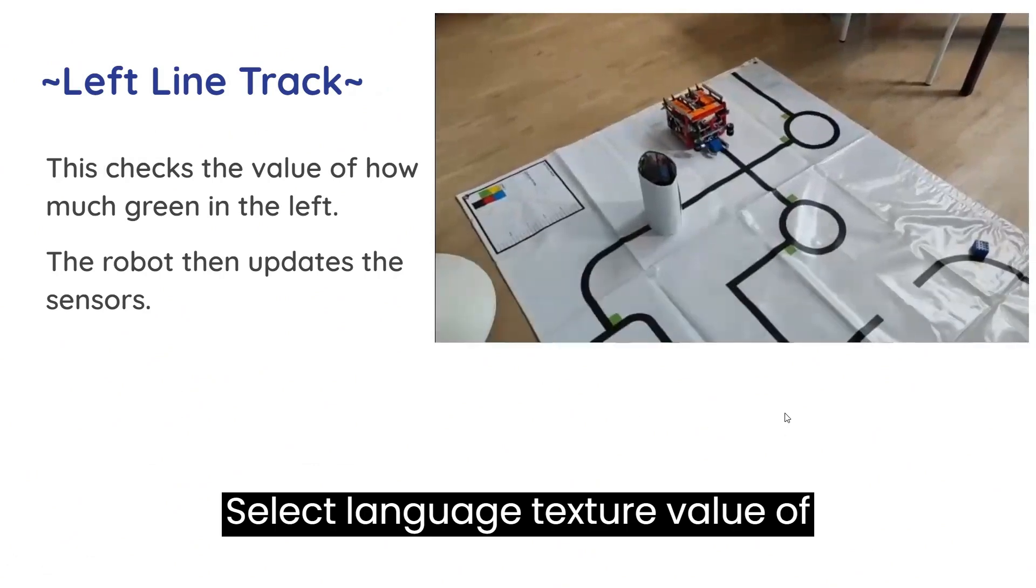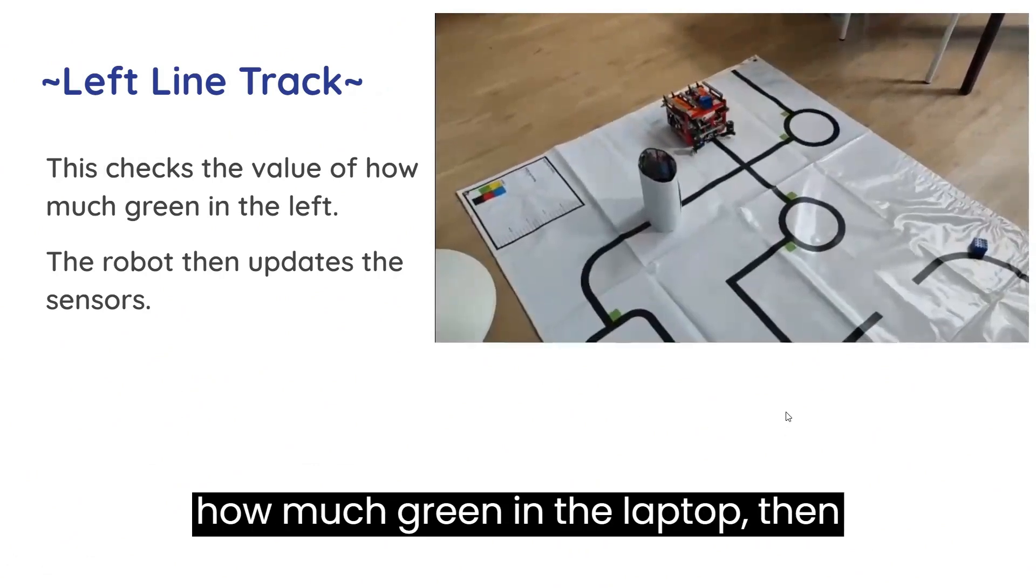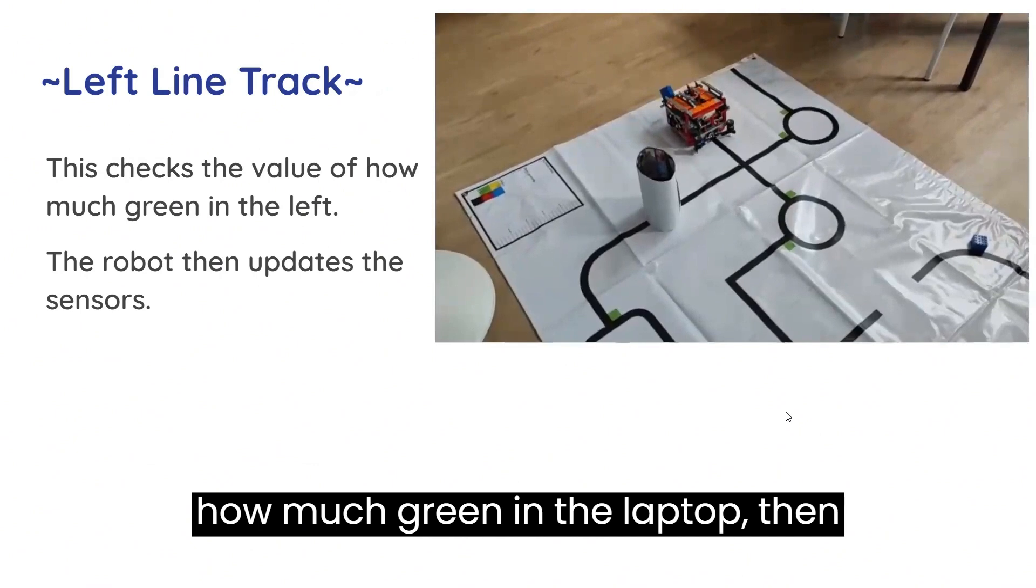The left line thread checks the value of how much green is in the left. The robot then updates the sensor.